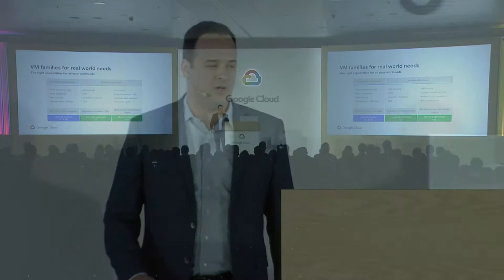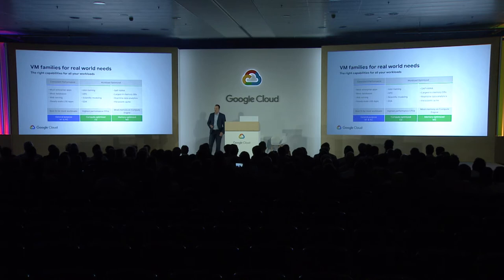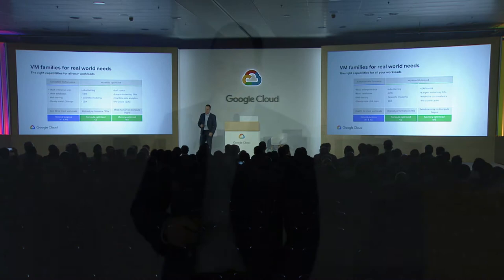GCE has always had the most flexible and most cost-effective cloud architecture because it was built on Google. This year we introduced workload-specific families so we could optimize and provide more choice for things like compute-optimized or memory-optimized. You have your general-purpose families with N1 and N2, which we introduced this year. These families are simple, flexible, and the best fit for most workloads.